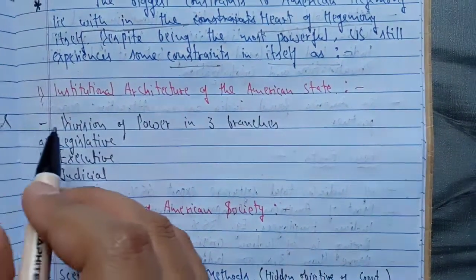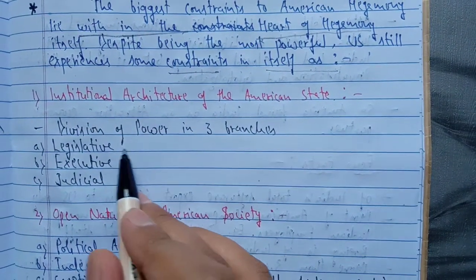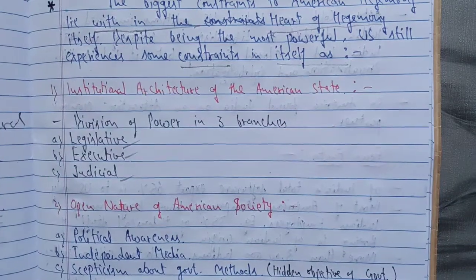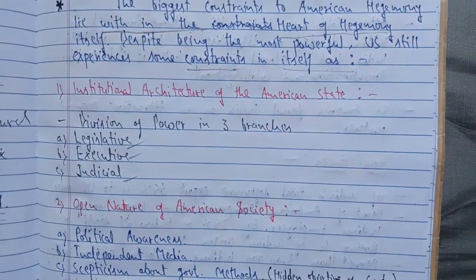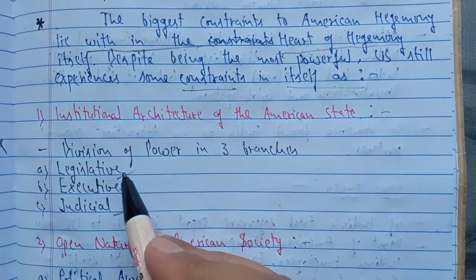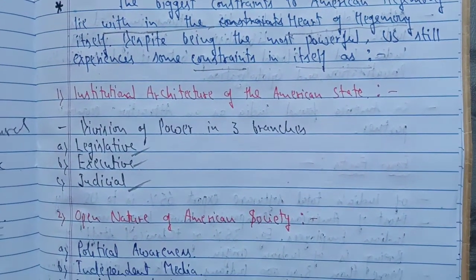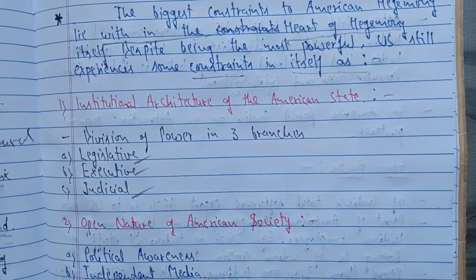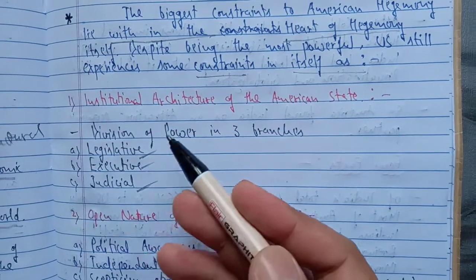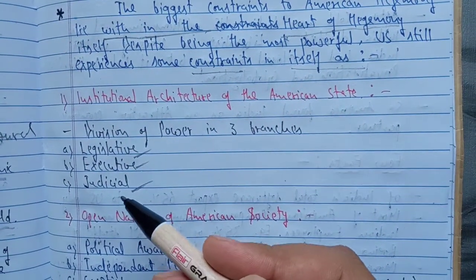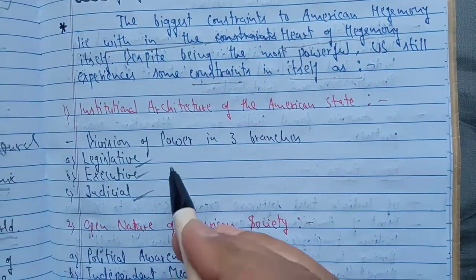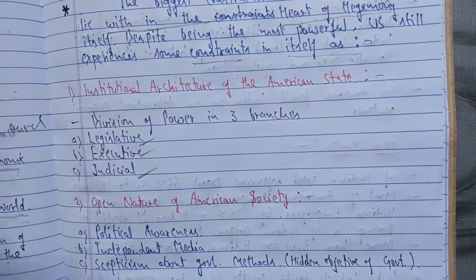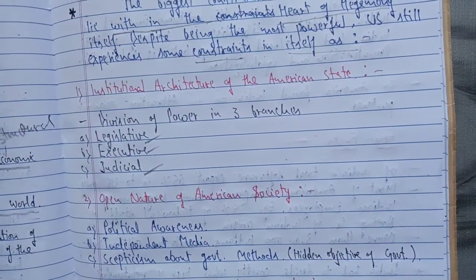First, I am taking the institutional architecture of the American state. This refers to the division of power into three branches — like in India we also have the division of powers between legislative, executive, and judiciary. In the same way, in America, power was divided between the legislative, executive, and judiciary. When there is such a division of power, they keep a check and balance on each other's power, so no one can misuse authority. The division of power thus put a constraint on the working, functioning, plans, and policies of American power.